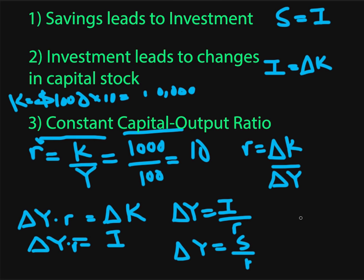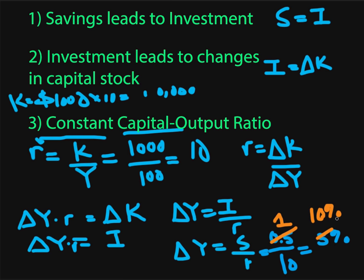This is quite an interesting result because the model argues that the only way to increase GDP — change in Y — is by increasing the savings rate, since R, the capital output ratio, is fixed. For example, if a country has savings of 0.5 and a capital output ratio R of 10, then change in Y equals 0.5 over 10, which is 0.05 or 5% growth — a modest rate. But if we could double the savings rate from 0.5 to 1, then we'd get 1 over 10, giving us 10% growth per year, which is quite fantastic. This is how the model reaches its conclusion.